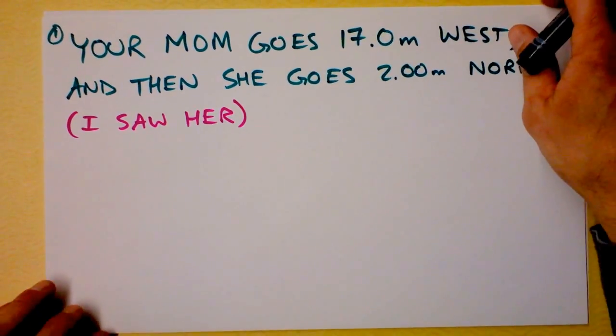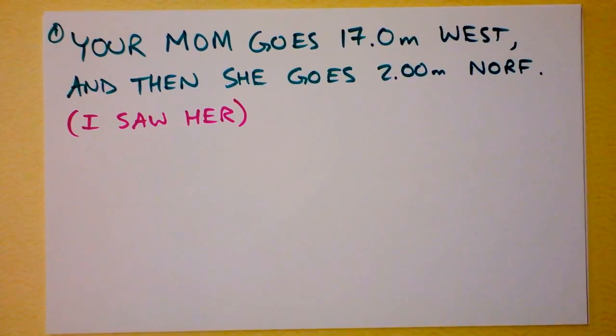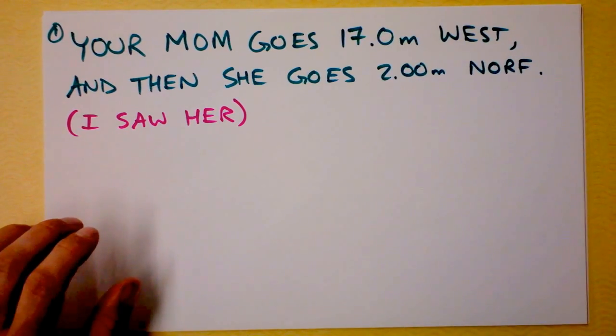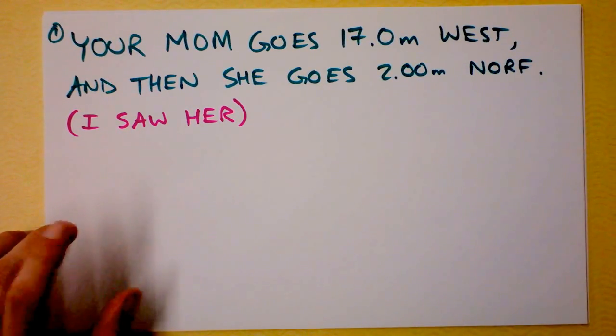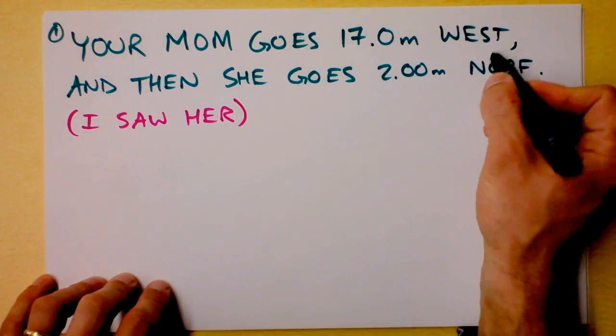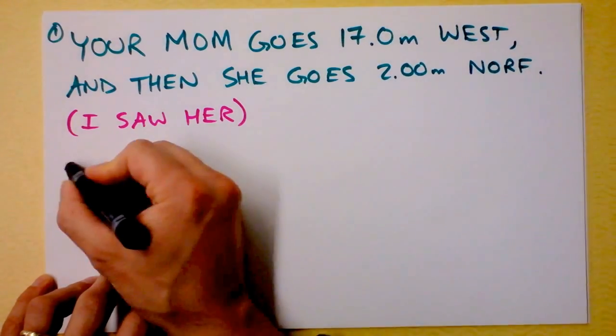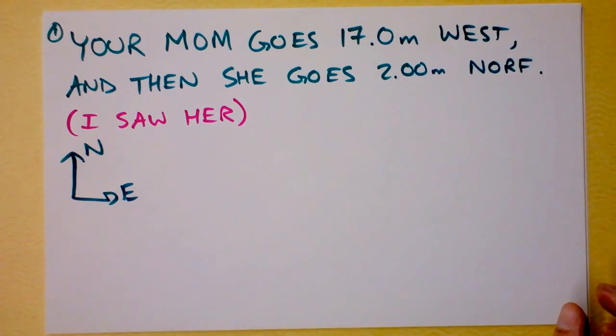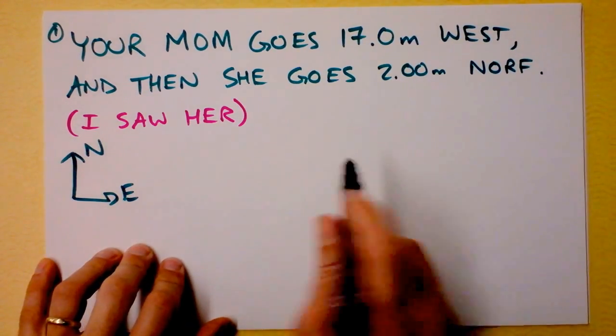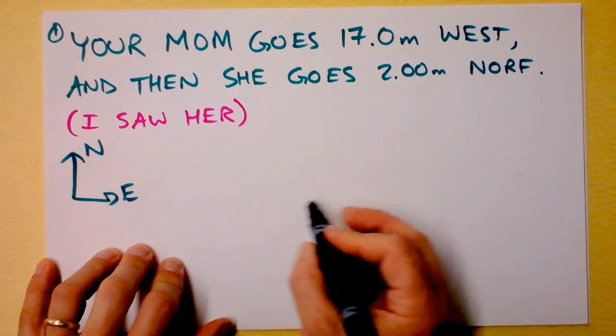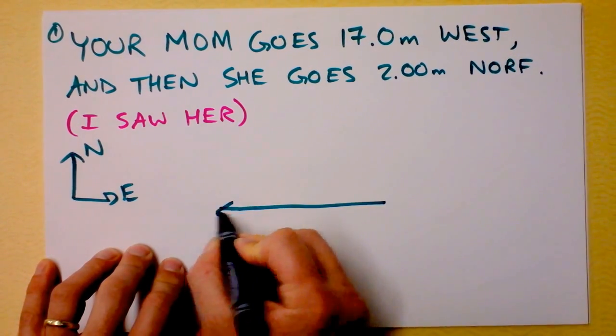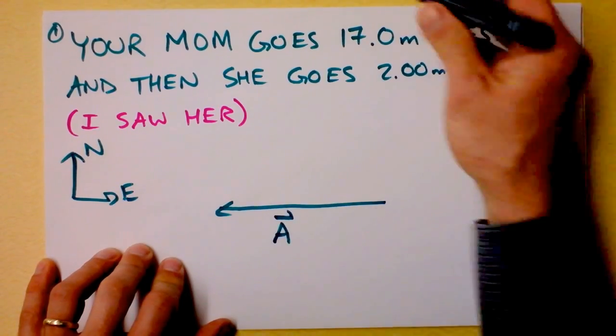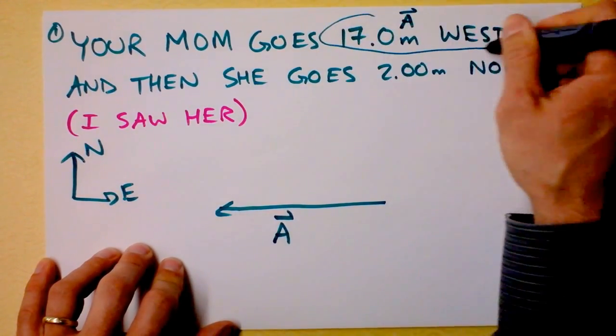Here's the first problem. Your mom goes 17.0 meters to the west, and then she goes 2.0 meters north. And I saw her do that, so I know it's true. Here's the first step. A coordinate system needs to show west and north, and so I'm thinking I can do a standard coordinate system like this where I show north and east. Then these two vectors tip to tail. Well, one vector's supposed to be west, and it's supposed to be 17 meters. I don't have to scale this because I'm going to use math to solve the problem for us. And there's the vector that I'll call A.